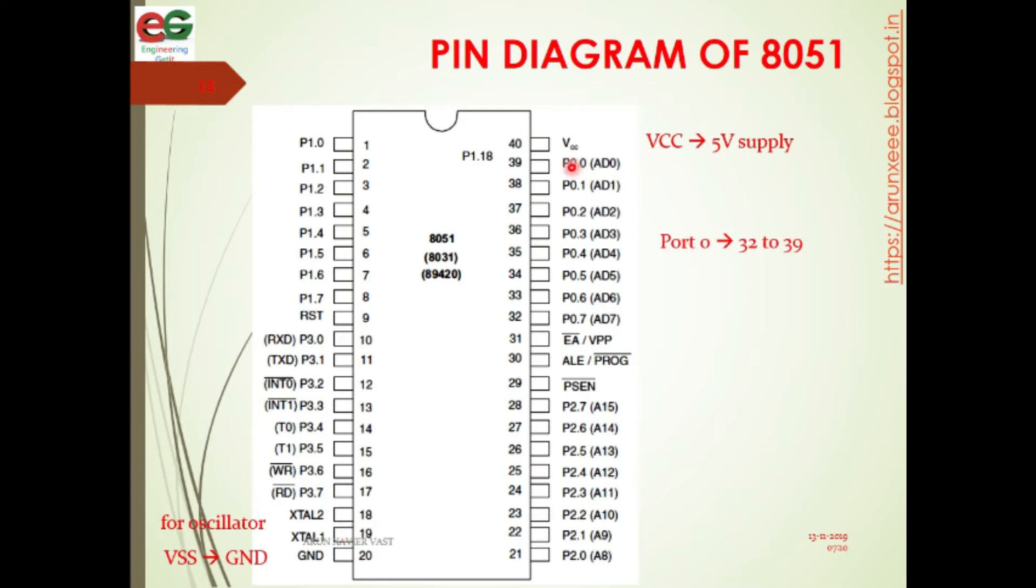Port 0 starts from the 39th pin to 32nd pin, that means 8 bits, and it is named as P0.0 for the first bit of port 0, then P0.1 meaning the second bit of port 0. Here it is written AD0 to AD7. AD means address or data, meaning this port 0 can transfer address and data.